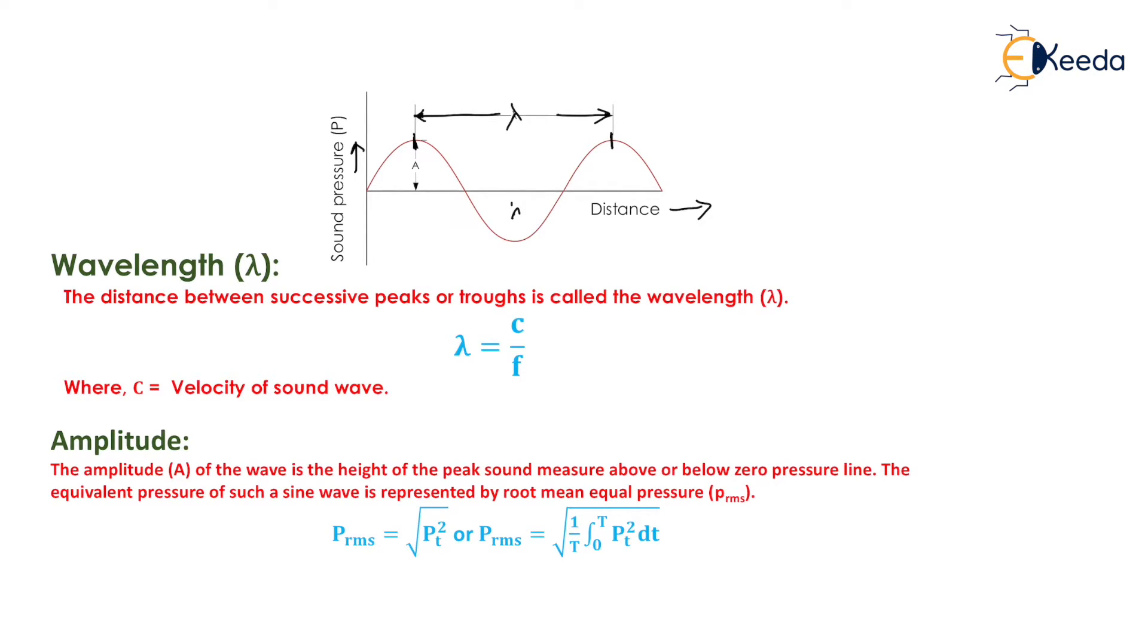Wavelength can be determined by lambda equals c by f, where c is the velocity of sound wave. Now we need to find the amplitude. The amplitude of the wave is the height of the peak sound measure above or below zero pressure line. It will be indicated as amplitude capital A.